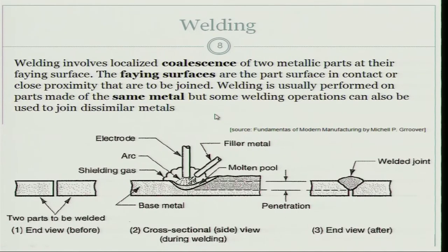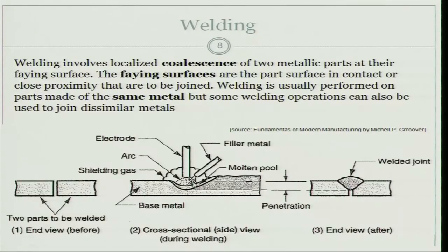Those were the various solidification applications in casting. Another application is welding. Although welding also involves a lot more other physics, the microstructure is greatly influenced because of the molten state of the material near the welding zone and the heat that flows through it. So the science of solidification is also to a great extent applicable to welding. Welding involves localized coalescence of two metallic parts at the faying surface.